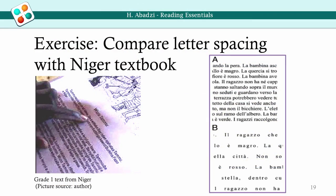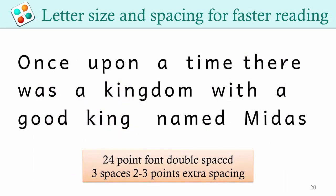Research with Italian dyslexics demonstrates the importance of spacing. Spacier letters make reading speed increase up to a point and then decrease. Italian dyslexic students could read a bit faster and twice as accurately when the text was spaced as shown. Compare the density with a grade 1 textbook from Niger. For beginner readers, letters should be large and spaced. Letter size and spacing for faster reading could be around 24-point font, double-spaced, three spaces between words, two spaces between lines, and two to three points extra spacing between letters.